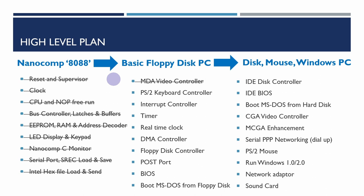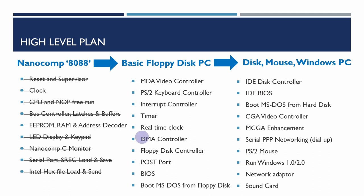That concludes the summary of building out the monochrome display adapter video controller. For more detail please check out the playlist at the end of this video for the full MDA series. In following videos we'll be building out the remaining steps to produce a basic floppy-disk PC able to boot MS-DOS, then adding an IDE disk controller, developing a CGA video controller, and eventually hopefully running an early version of Windows. Please hit subscribe and like if you can — and check out the links in the description for other mentioned projects. Thanks for watching.